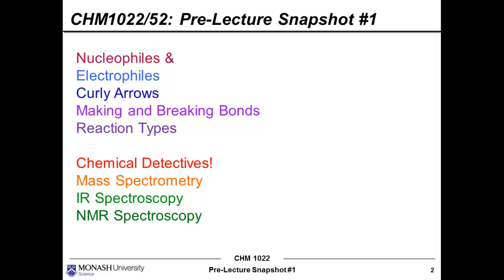In week two we're going to talk about nucleophiles and electrophiles — a couple of bits of terminology you may not have heard before. These two entities are tied together with what we call curly arrows. That's really what we call them. The way that nucleophiles and electrophiles interact via curly arrows, which depict the movement of electrons, is really the story of making and breaking chemical bonds.